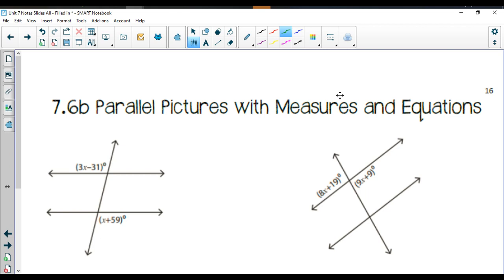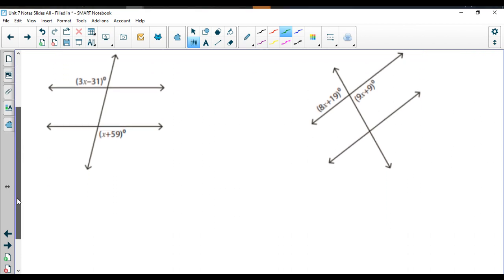Alright, so this is lesson 7.6b, parallel pictures with measures and equations. It's kind of a continuation from the previous lesson. We're going to see some of our equations get a little bit more complicated here where we're going to have to combine some more like terms or we might actually end up having variables on both sides depending on the situations. This starts on notes packet page number 16.